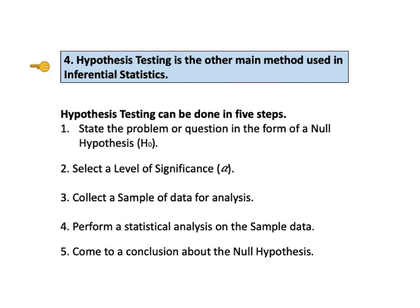Key to understanding number 4 says: hypothesis testing is the other main method used in inferential statistics. There are two chapters in the book and two videos on hypothesis testing. Hypothesis testing can be done in five steps: state the problem in the form of a null hypothesis; select a level of significance, alpha; collect a sample of data; perform a statistical analysis on the sample data; and come to a conclusion about the null hypothesis.